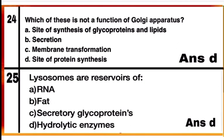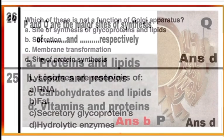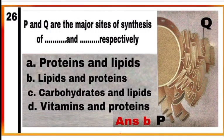Question 25: Lysosomes are the reservoir of option D — hydrolytic enzymes like lipases, proteases, and carbohydrases. Question 26: P and Q are the major sites of synthesis of blank and blank respectively.